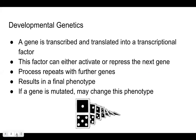In developmental genetics, an initial gene is transcribed and translated into transcriptional factors that can either activate or repress the next gene from being transcribed and translated, in which its product will repeat the same process with the next gene, and so on and so forth. So after you keep activating or repressing further gene expression sequentially, you eventually get your final phenotype.